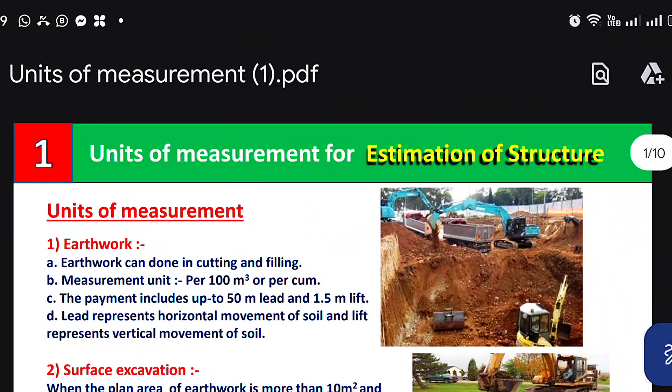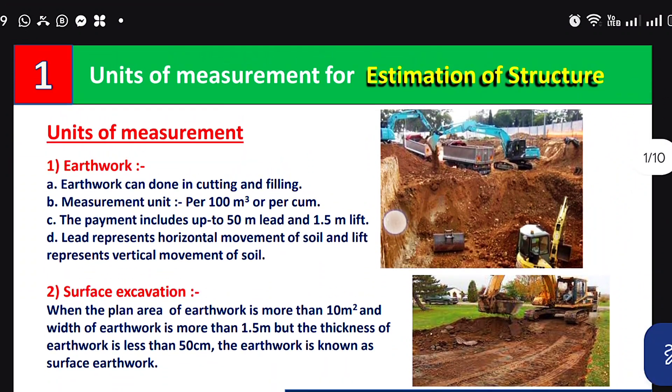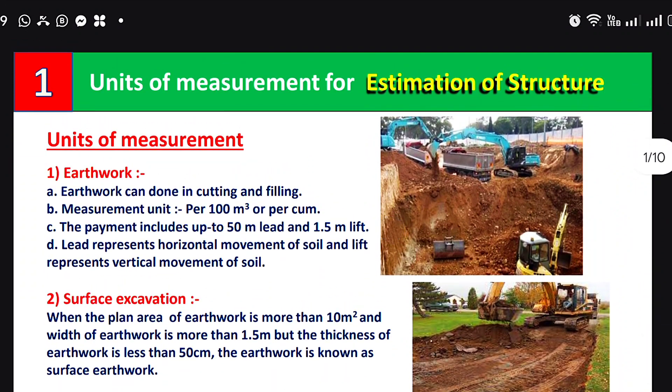You can see in the picture — this decorative corner element is the cornice, and it is measured per running meter. These are the most important units of measurement for estimation of structures. Please like this video and subscribe to the channel for new updates about civil engineering.